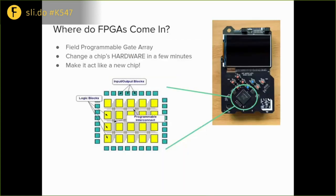A group of us got together and tried to do that. What was on the badge is not a normal processor — it's an FPGA. An FPGA stands for Field Programmable Gate Array. It's a sea of logic gates — the one on this chip has 45,000 gates — and we can configure that to be any sort of digital logic we want to design, including a processor.